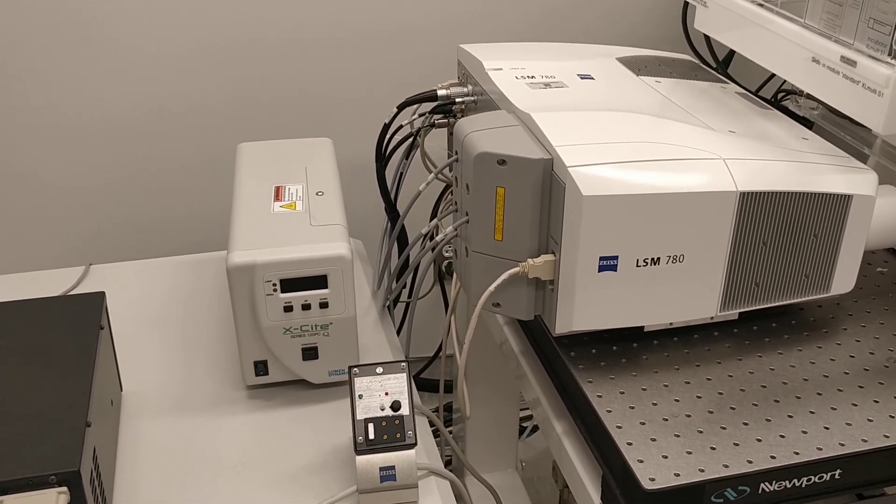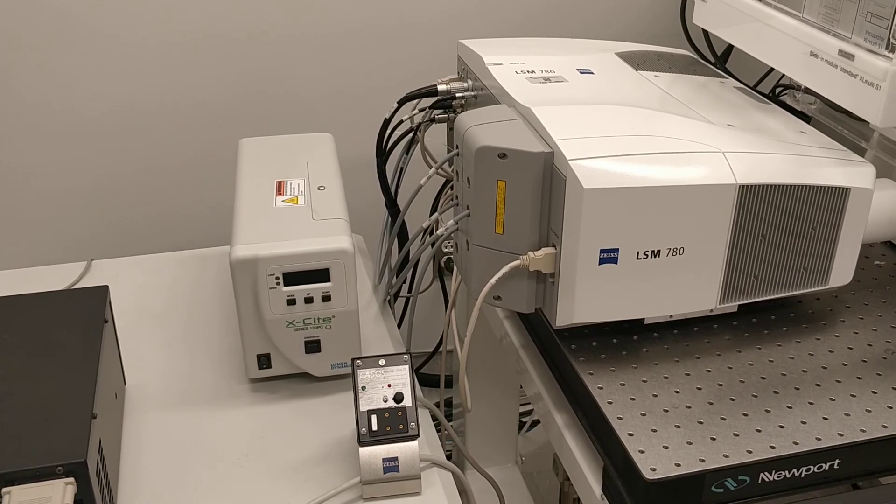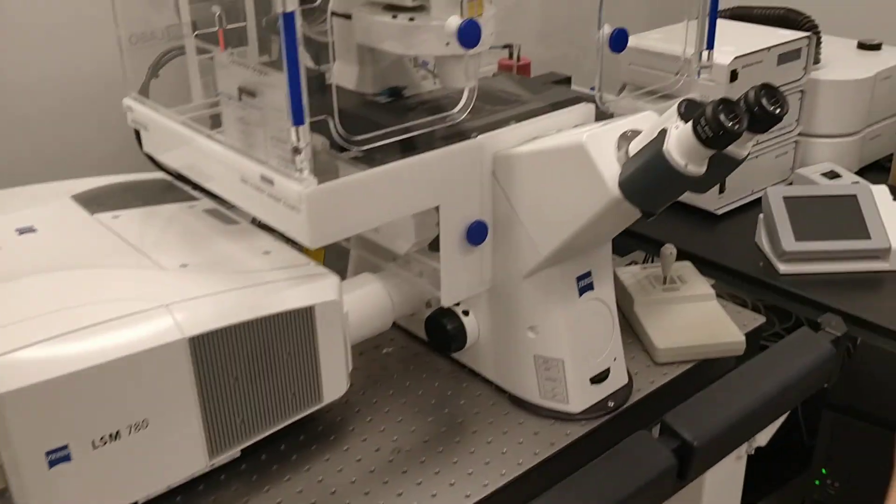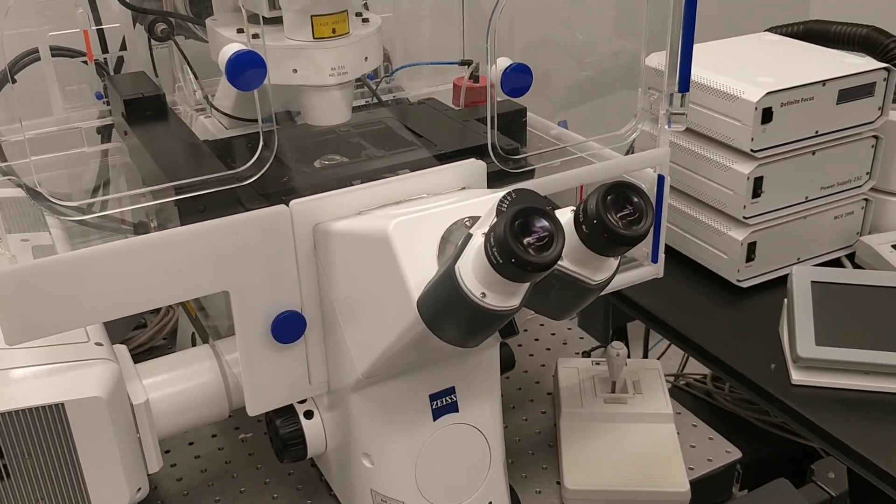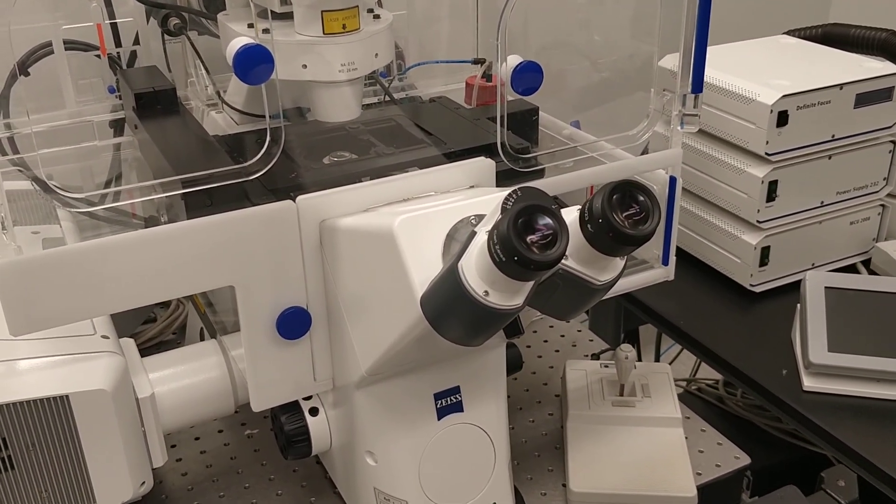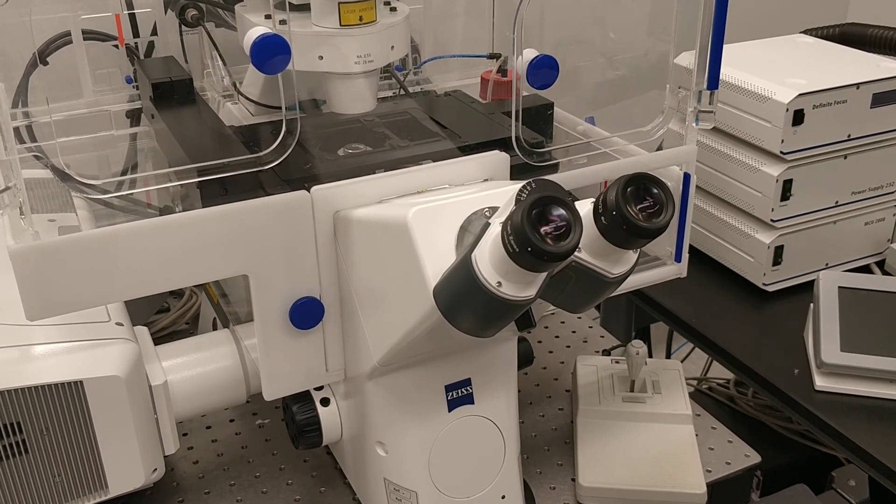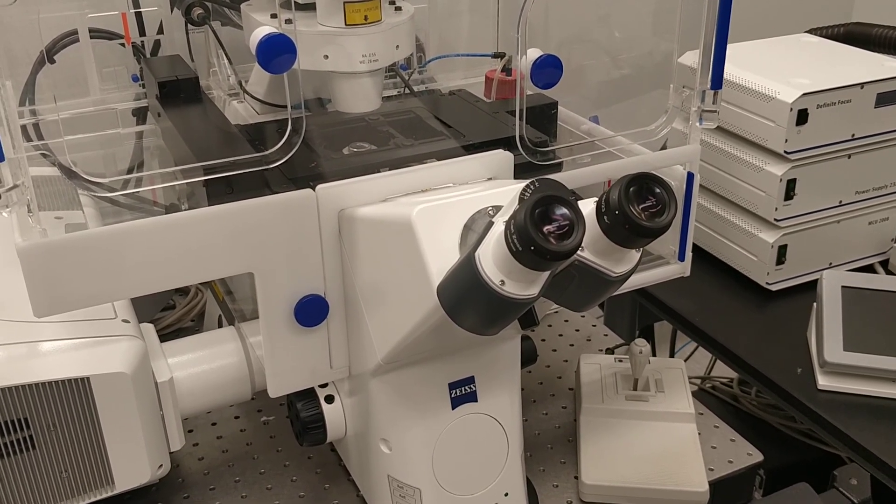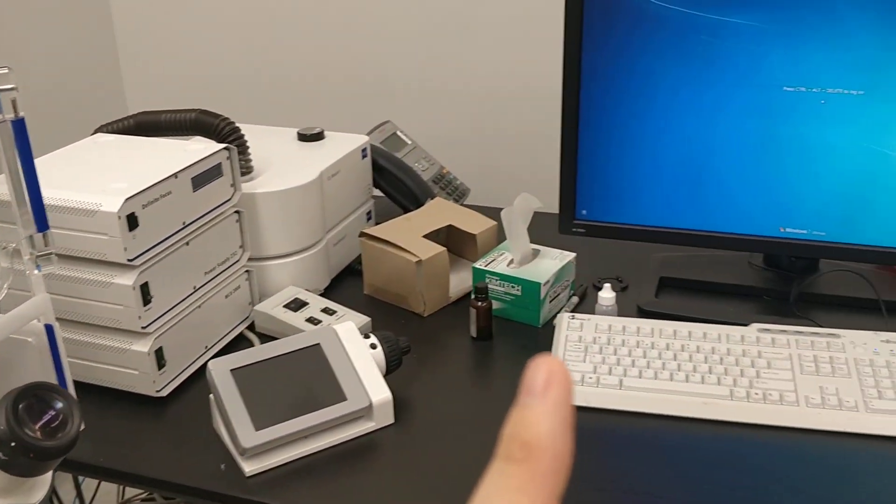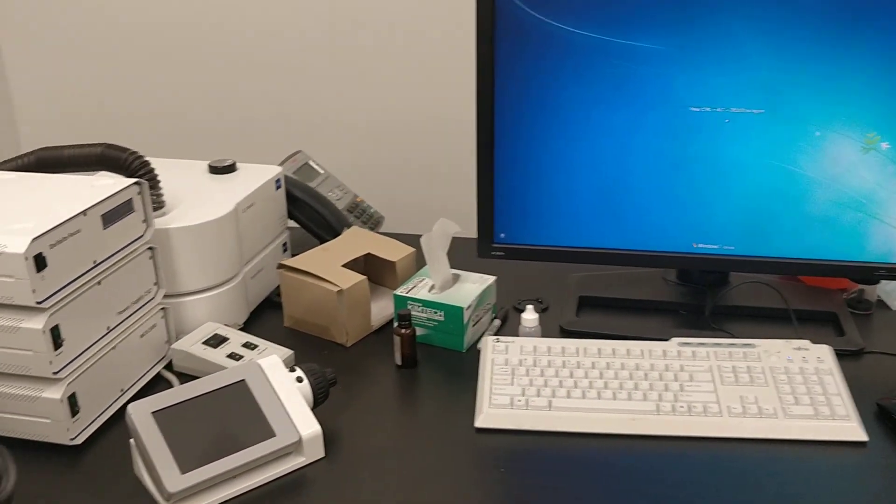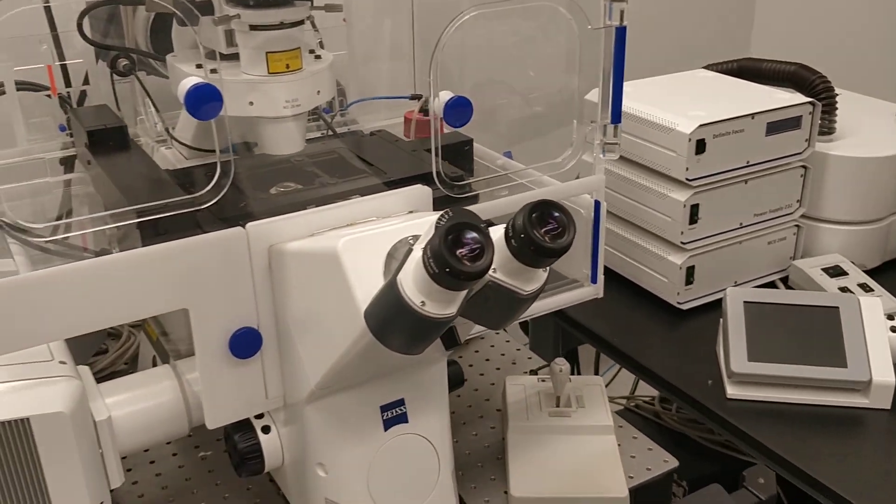But keep in mind, because when we're seeing our sample under the eyepiece, we are using the Mercury lamp, and when we're imaging we're using laser, which means that what you're seeing here and what you are going to see on the screen are going to be a bit different because the light source are different.